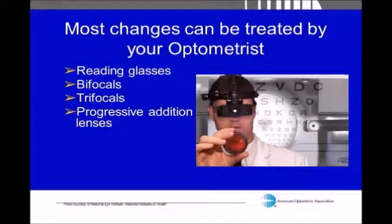Most of these changes can actually be corrected by your doctor, usually through reading glasses, bifocals, trifocals, or progressive lenses — these are the most common ways to correct for it. It's usually noticeable in your early to mid 40s, and it's not a disease, it's not something that can be prevented; it's just a normal aging change.